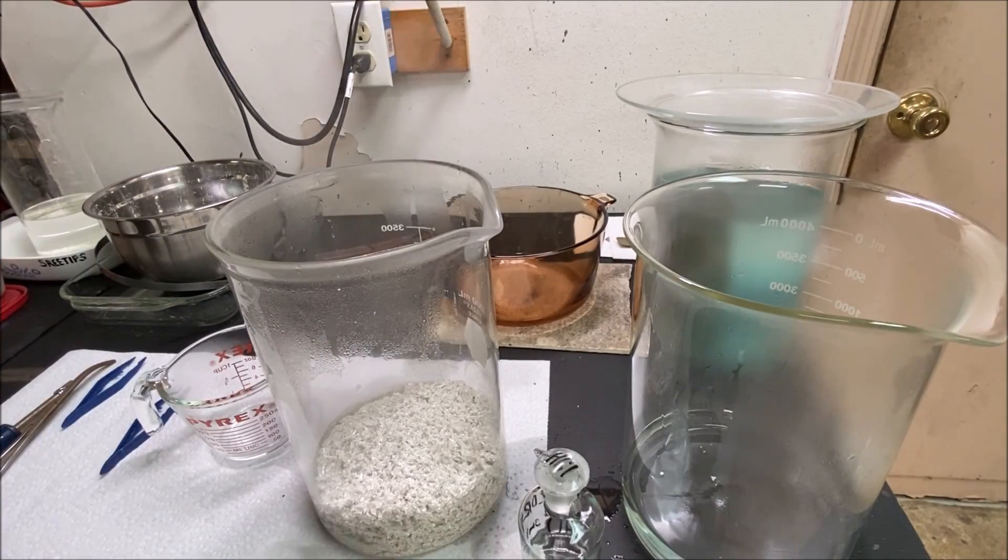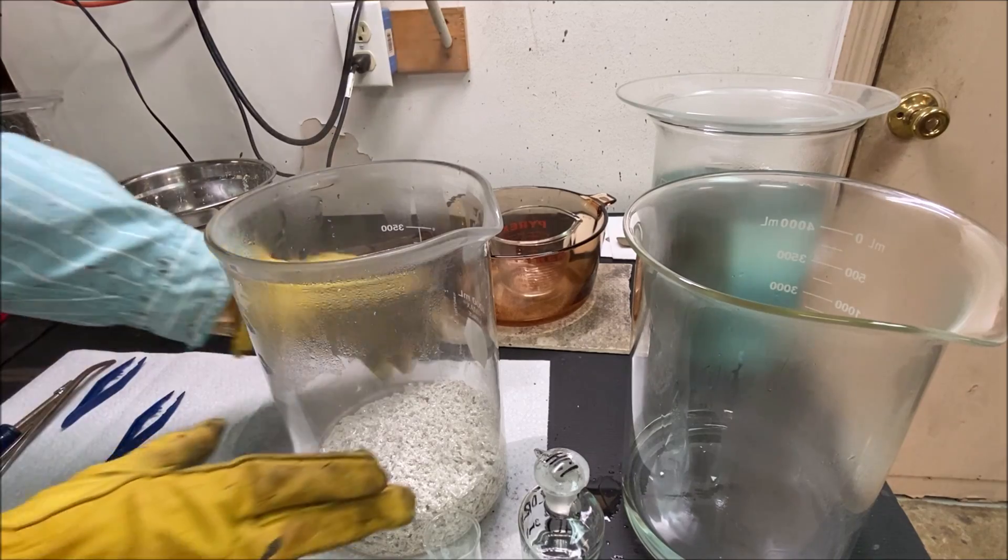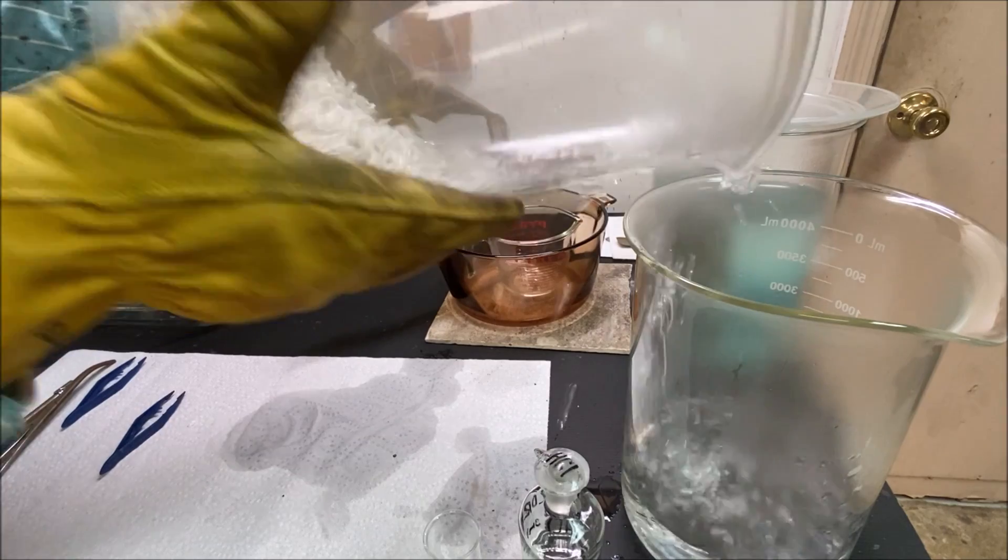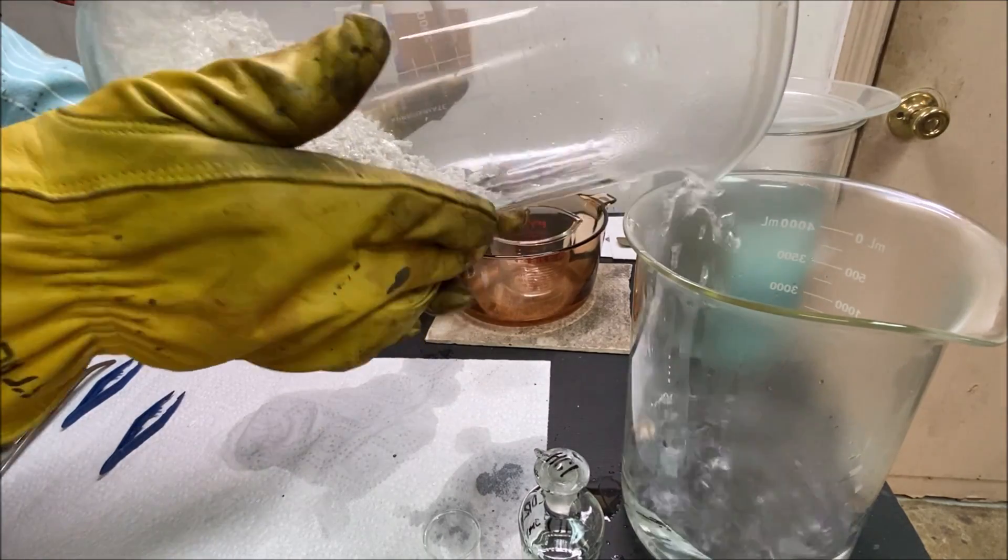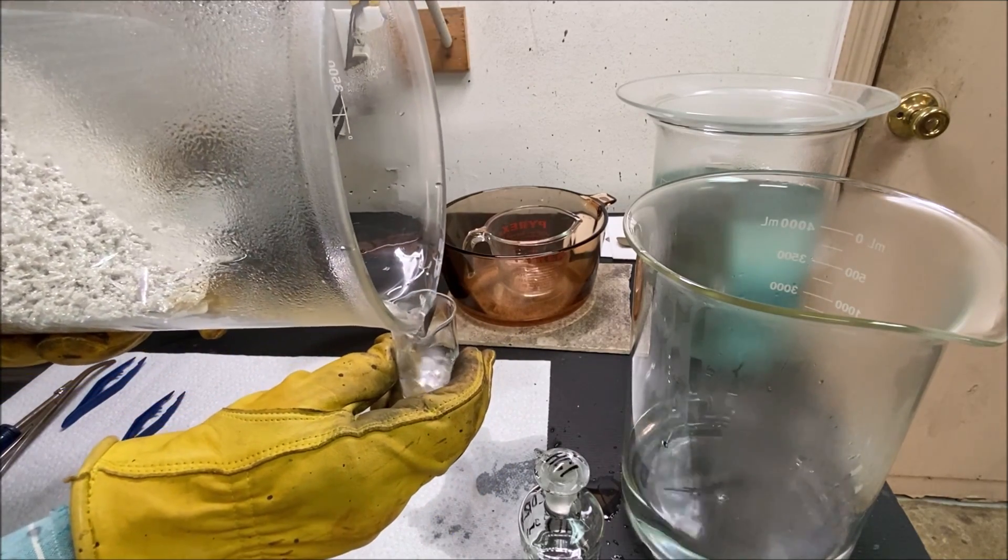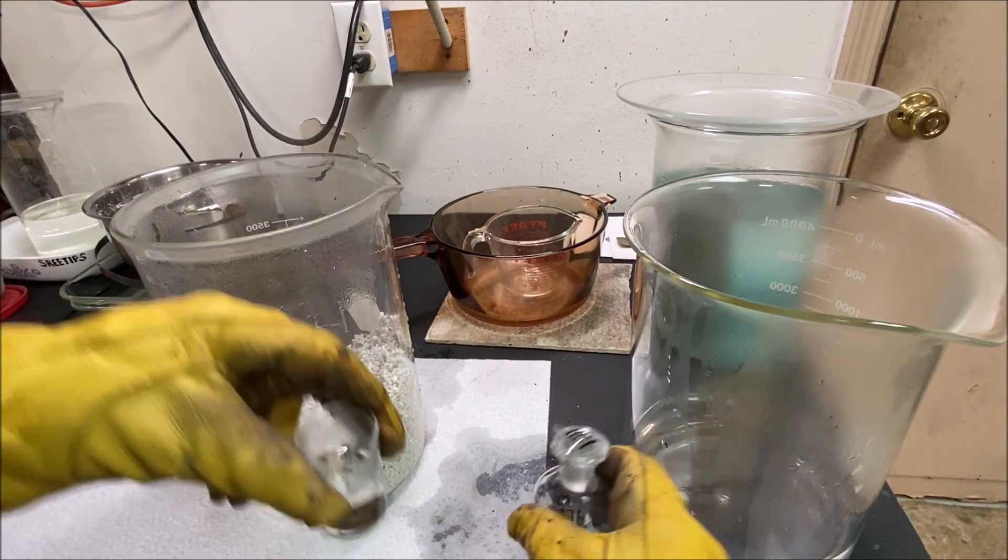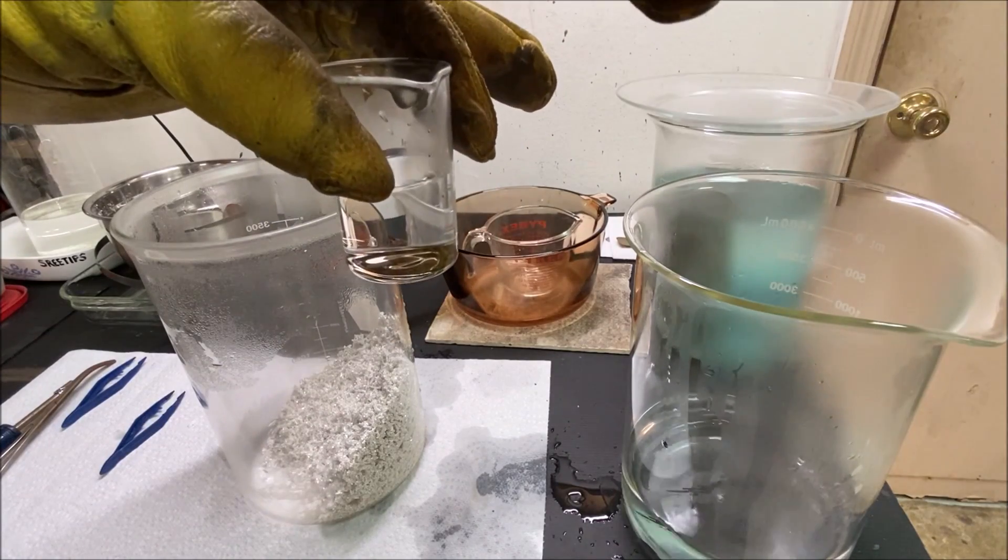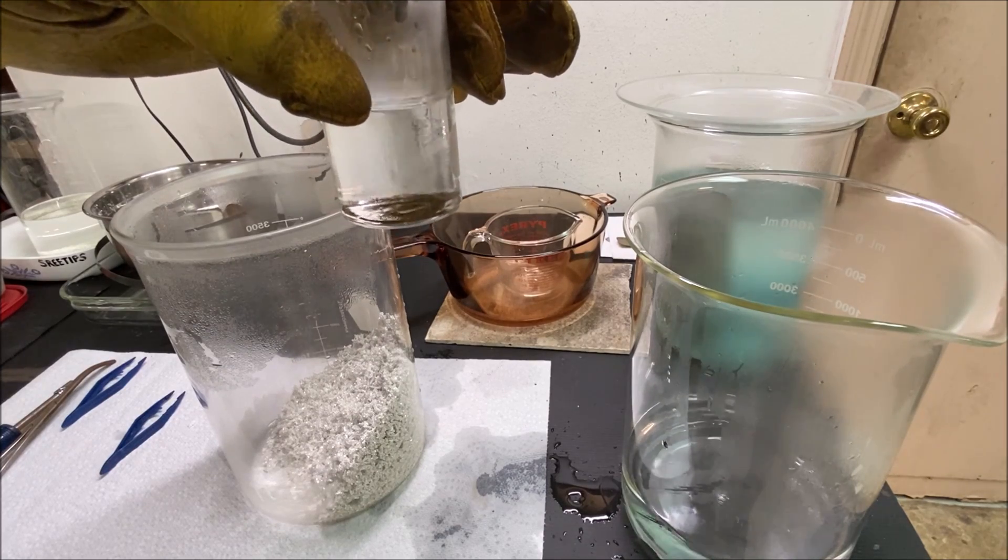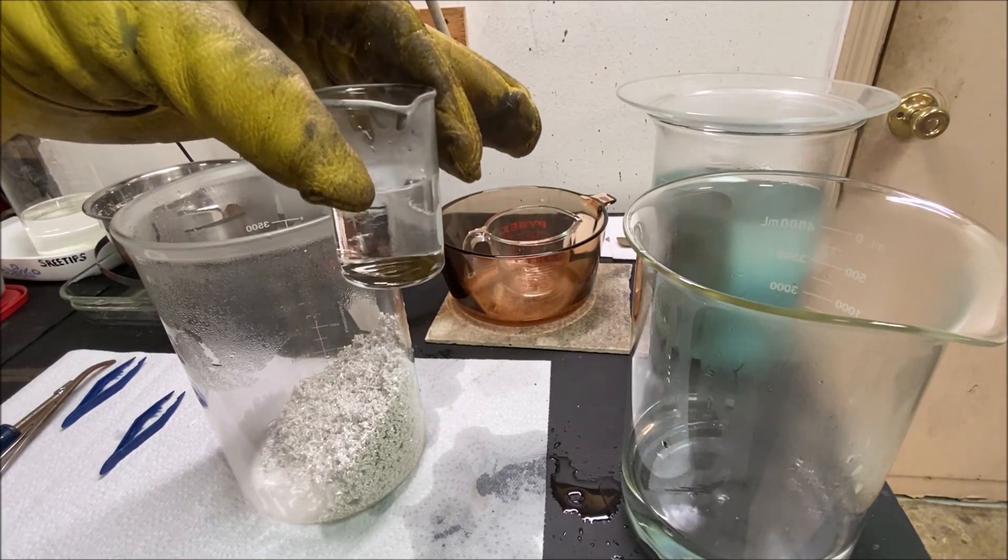All right, we should have all the electrolyte rinsed off there by now. Let me get a little sample of this and pour this off. We'll get a sample of this in our beaker. Now we'll add some hydrochloric acid. See if we've got silver chloride forming in here. I don't see any silver chloride forming, so I'm fairly certain it's safe to conclude that all the electrolyte has been rinsed off of our silver.